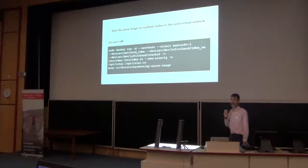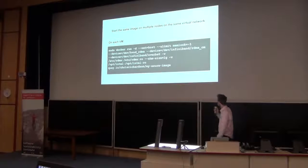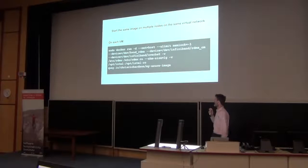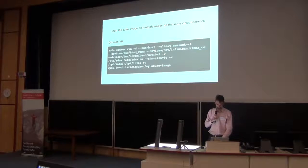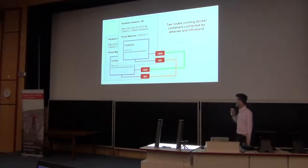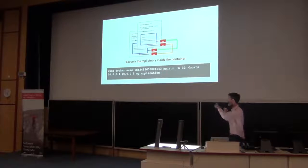So you log into each node of your virtual machine and run with net equals host and mount equals devices to share all the InfiniBand devices. You enable the container to read the configuration from the host, and run the image as a daemon so they can talk to each other. That sets up the InfiniBand connection between the containers, and then inside those running images you can execute your application with MPI, and it works.